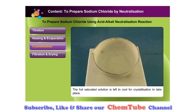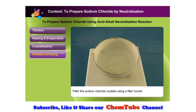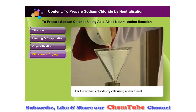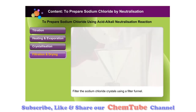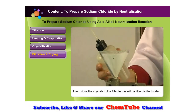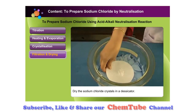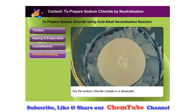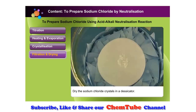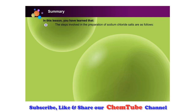Click on the filtration and drying button. The sodium chloride crystals are then filtered using a filter funnel. Rinse the crystals in the filter funnel with a little distilled water. The sodium chloride crystals are then dried in a desiccator. We have now obtained a sample of sodium chloride crystals using the neutralization reaction.